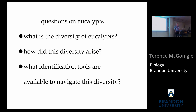So what am I going to focus on today for eucalypts? What is the diversity of eucalypts and how did this diversity arise? Those two questions can be fairly easily addressed — there's literature on this. And more practically, what tools do we have to navigate this diversity? How do you work with it when you're going to see a lot of diversity as a student of it?